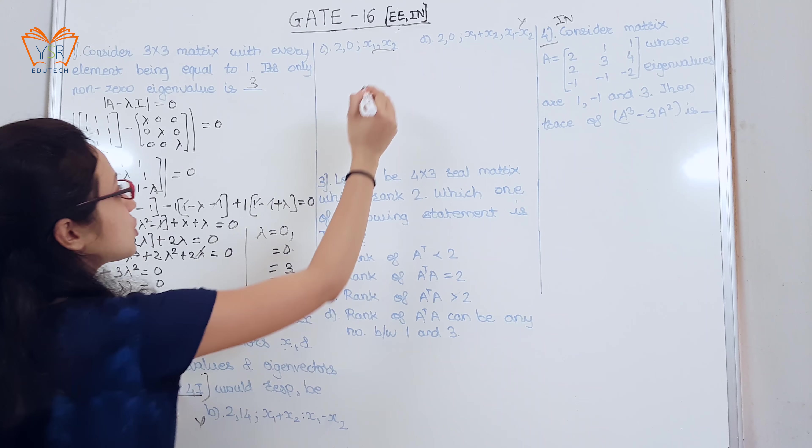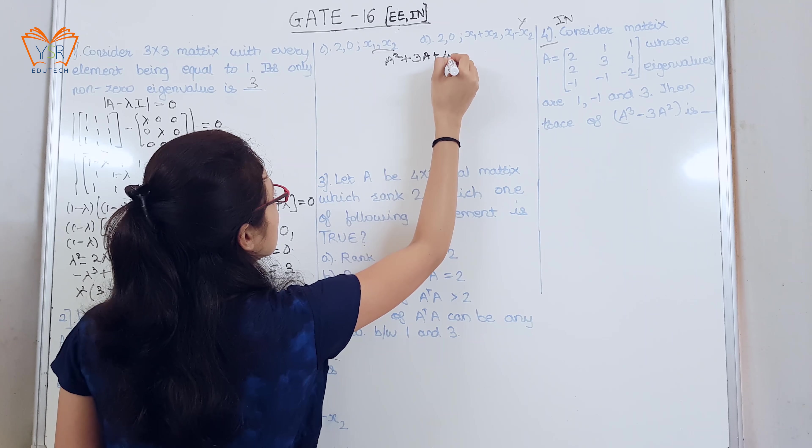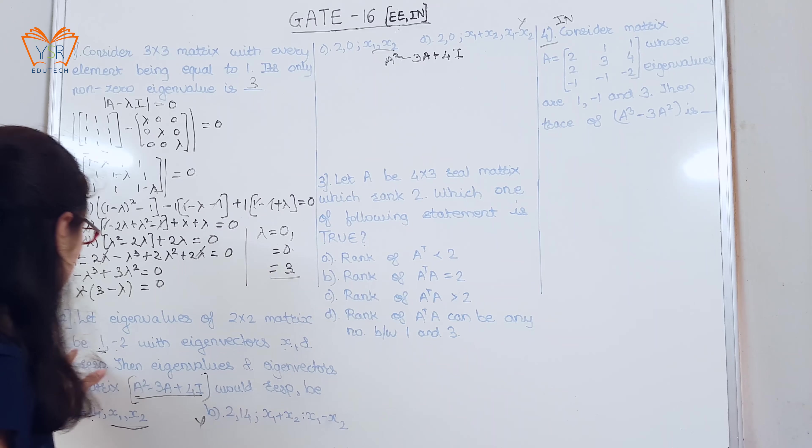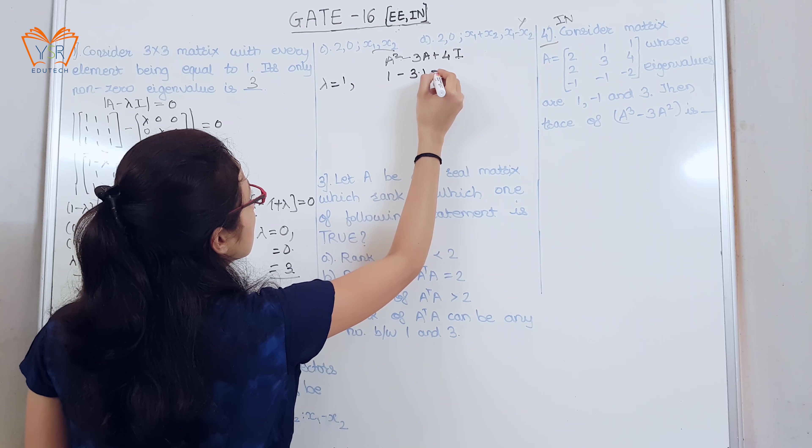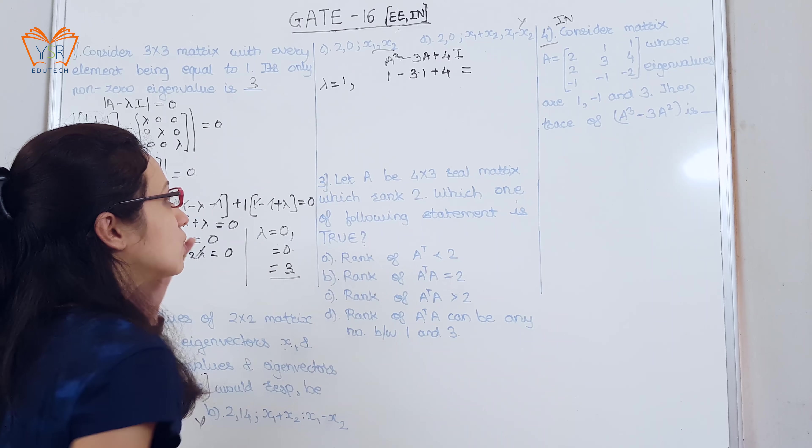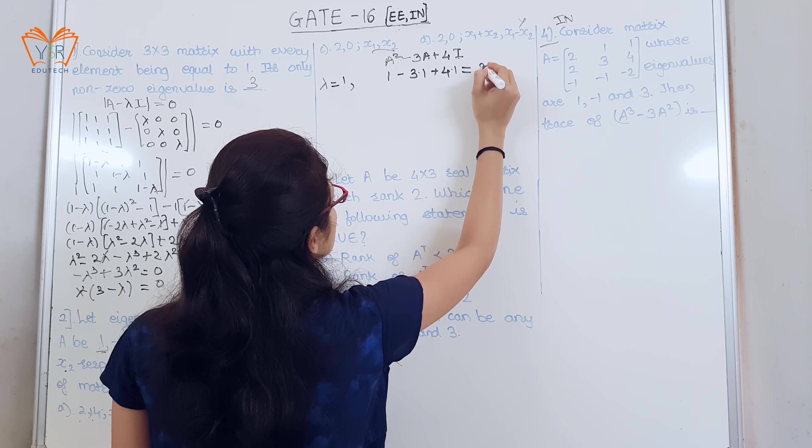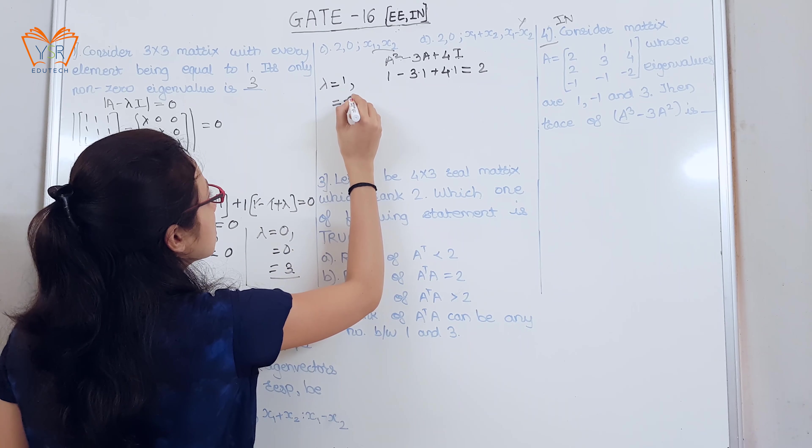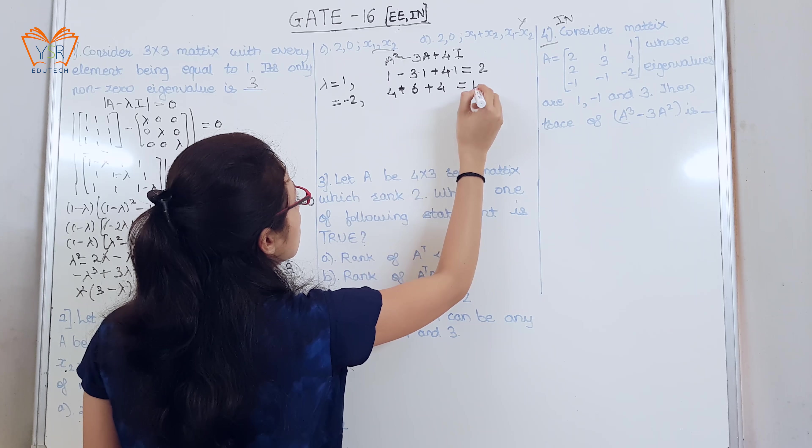Take this matrix A square minus 3A plus 4I. Now the first eigenvalue is 1. For lambda equal to 1, eigenvalue of identity matrix is 1. So, 4 into 1 minus 2 plus, so it is 2, and for eigenvalue minus 2 we get 4 minus 6 plus 4 is equal to 14.